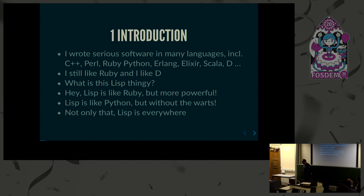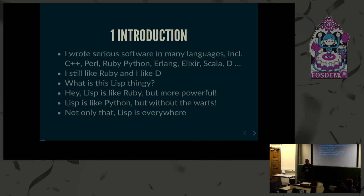I discovered that Lisp is very much a Ruby - or Ruby is a Lisp, really. I met Matz, who is the creator of Ruby, two years ago. I asked him how come Ruby is so much like Lisp? And he said actually people in the early days called it 'Matz's own Lisp' instead of Ruby. Lisp is also a lot like Python. And there's something else: Lisp is everywhere.